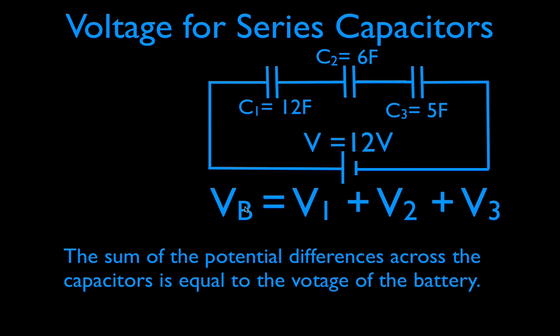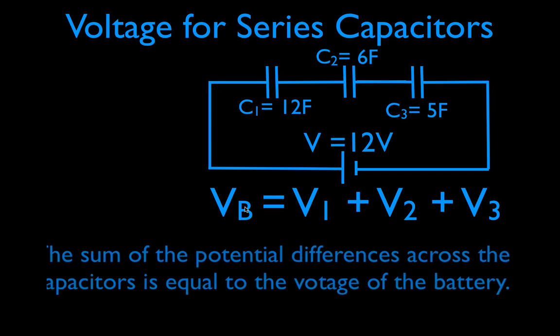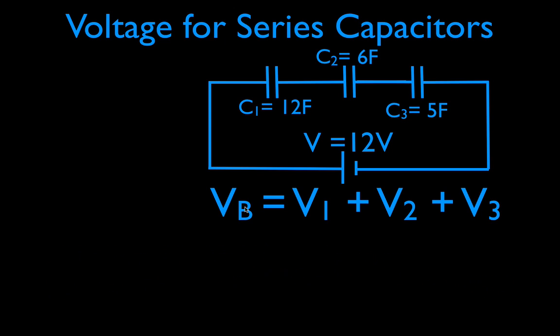And we can say that nicely in good English. The sum of the potential differences across the capacitors is equal to the voltage of the battery. And we are going to go through and we're going to calculate and figure out how to show you. I'm going to show you how to calculate the potential difference across the plates of those capacitors.